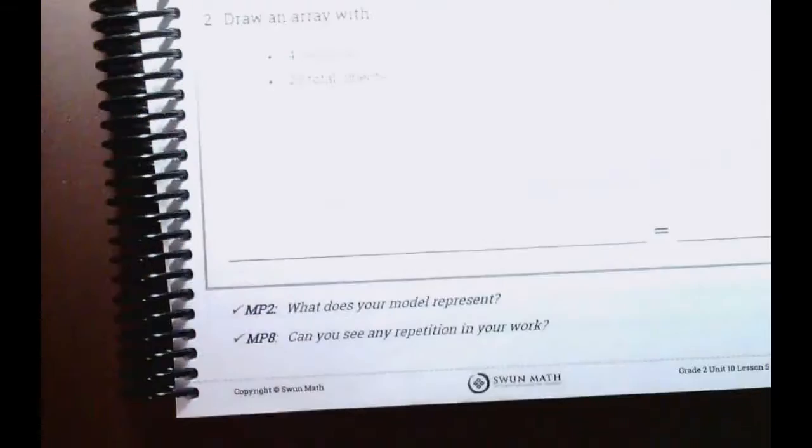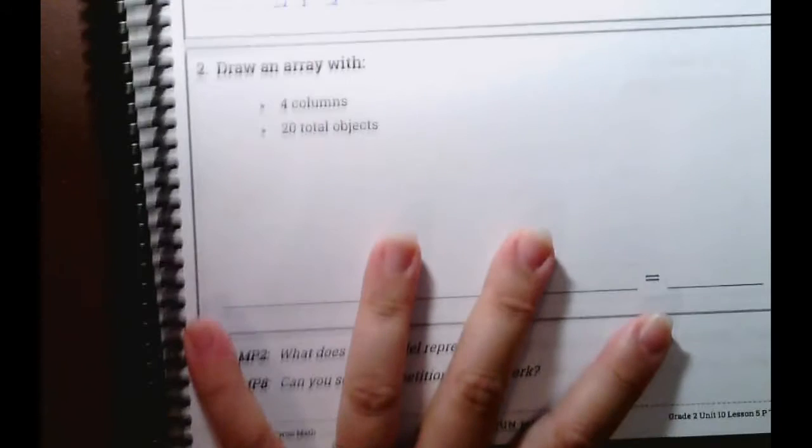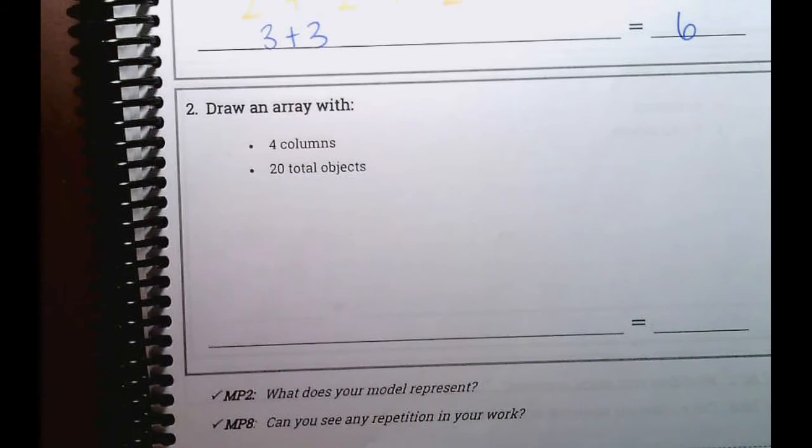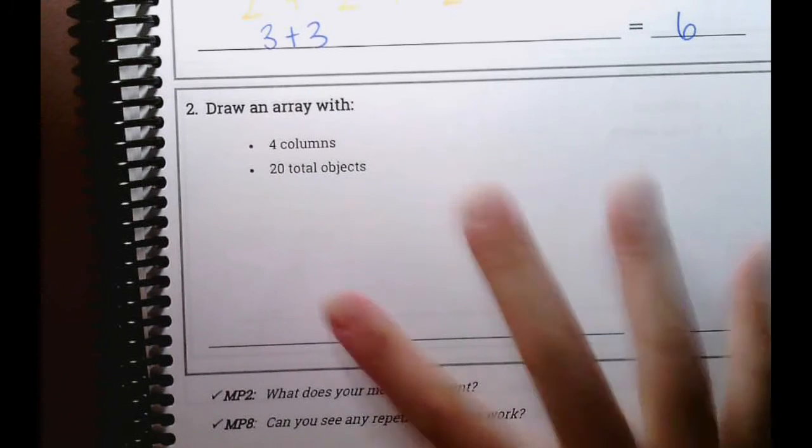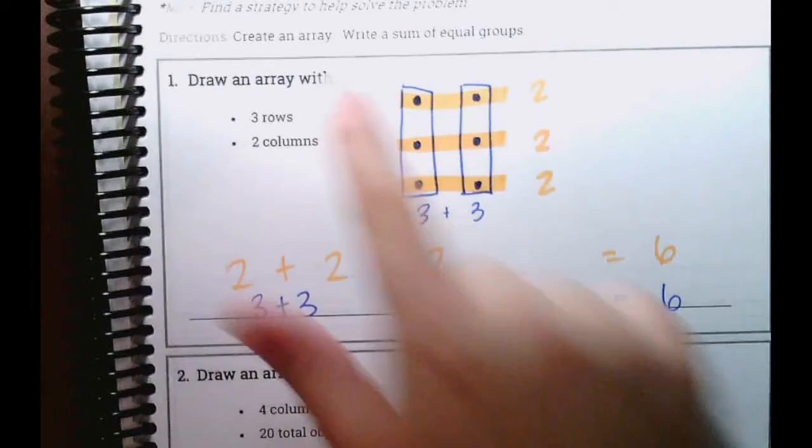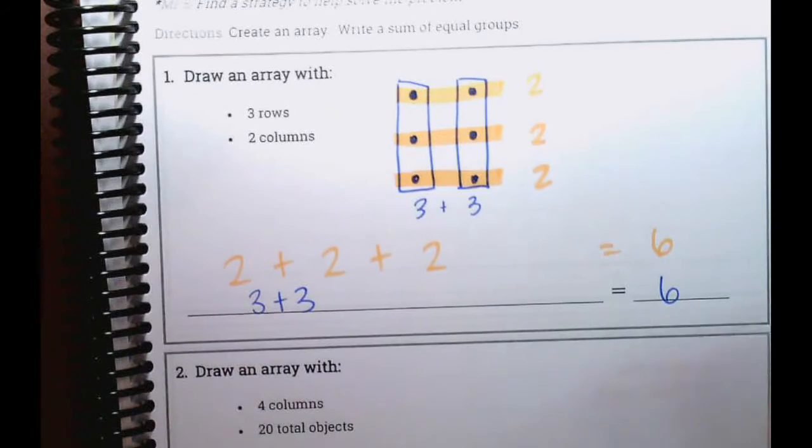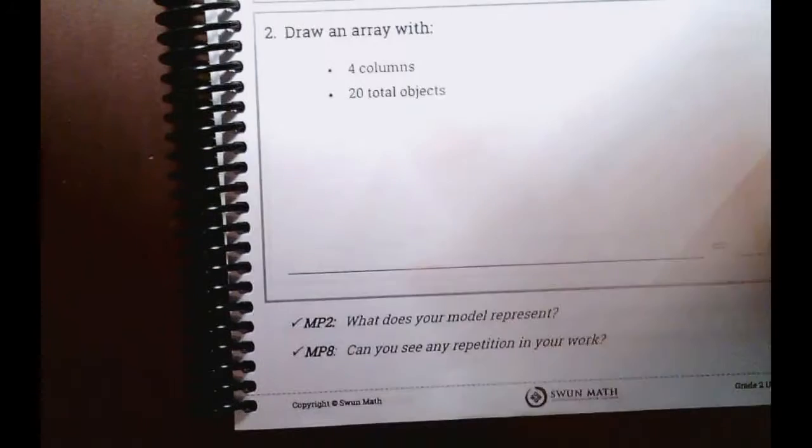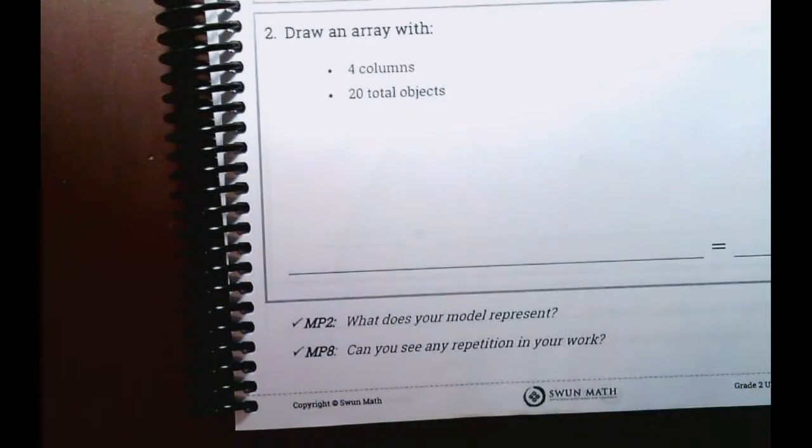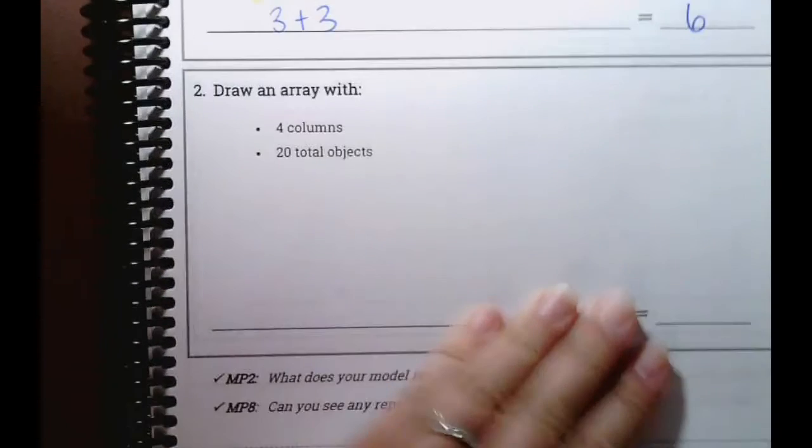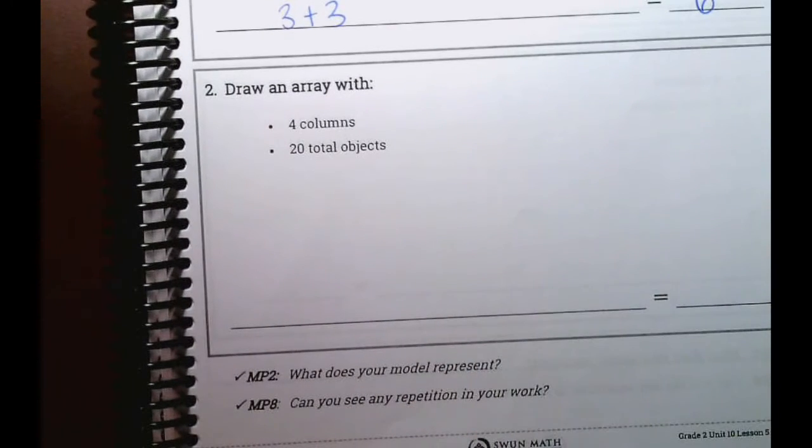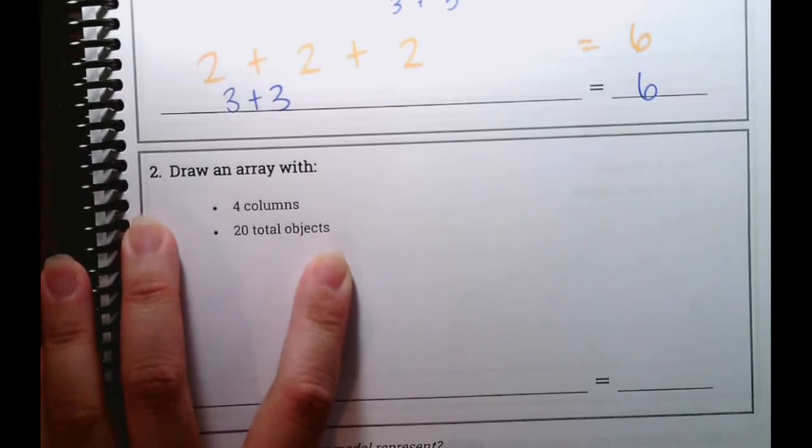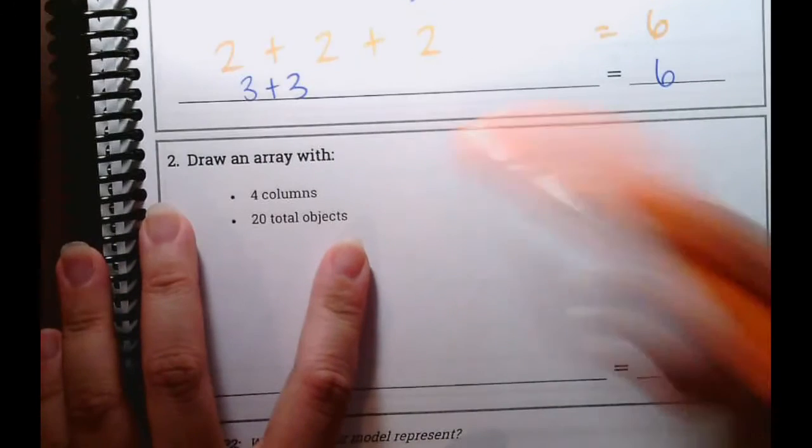All right. Let's go to number two. Number two says to draw an array with four columns and there are 20 total objects. Okay. This is a lot different than if they gave us the rows and columns. So let's see. With what information is given? If they give us columns and the total objects, what is missing? The number of rows. Good.